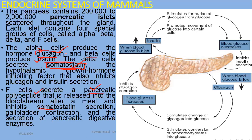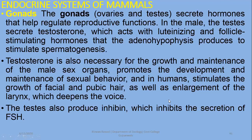If blood glucose level is high, insulin will lower it by various ways — it stimulates the formation of glycogen from glucose and deposits it in the liver. Glucagon has the inverse function; through various activities including fat conversion, it promotes glucose formation so that blood glucose levels rise. So glucagon and insulin have antagonistic functions.